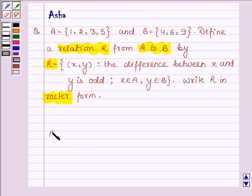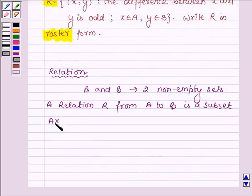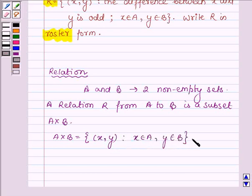So first let us learn some simple definitions starting with the term relation. If A and B are any two non-empty sets, then a relation R from A to B is a subset of the Cartesian product A cross B, where the elements of A cross B are the ordered pairs of the type (x, y) where x belongs to A and y belongs to B. This is the roster representation of the relation R which is from A to B. So this definition is a key idea that we are going to use in this problem to solve it.